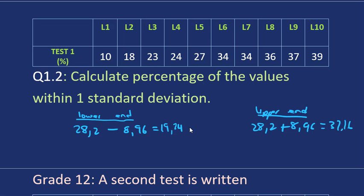So the values within one standard deviation are the values that lie between 19,24 and 37,16. So let's look at our values. That is obviously not within our standard deviation because it's less than 19. That is also not within our standard deviation because it's less than 19,24. This is within, this is within, this is within. All of these values are within the 37, but the 39 is not because it's more than this. Remember, values cannot be less than 19,24 and they cannot be more than 37,16. Once they are, they are not within the standard deviation.